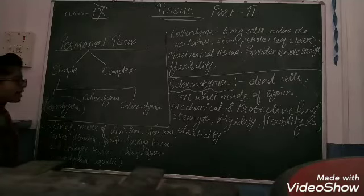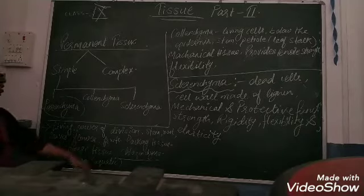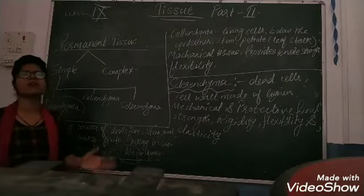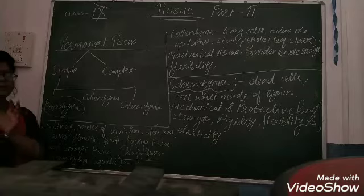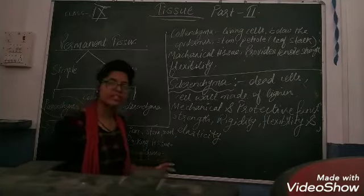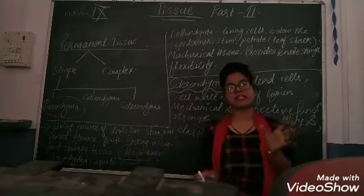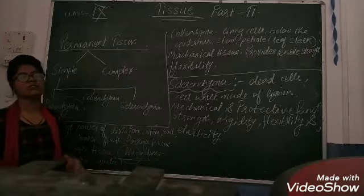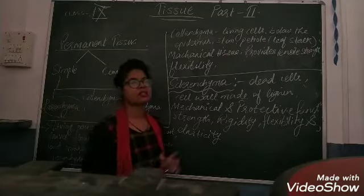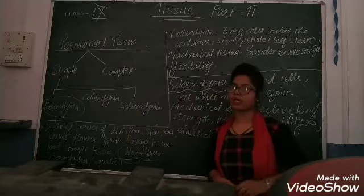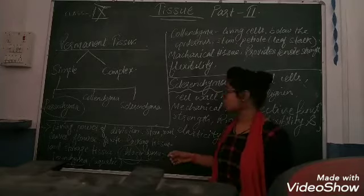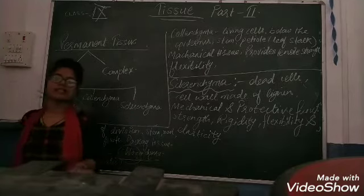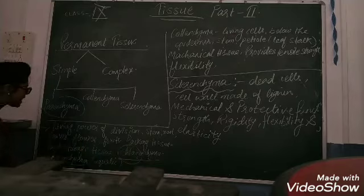Parenchyma is also known as chlorenchyma and aerenchyma. Chlorenchyma — 'chlor' is related to chlorophyll. Whenever we talk about chloroplast or 'chlor', it means it is related to chlorophyll, which helps in the process of photosynthesis. Photosynthesis is the food preparation by the plant using carbon dioxide, water, sunlight, and chlorophyll. That process is known as photosynthesis. The parenchyma is known as chlorenchyma because it helps in the process of photosynthesis.